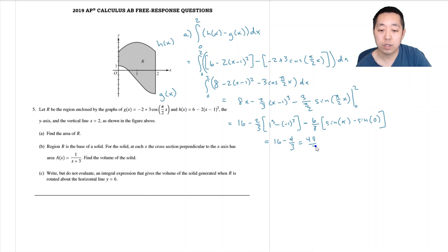And this is 48 over 3 minus 4 thirds, and that's 44 over 3. A lot of arithmetic there.